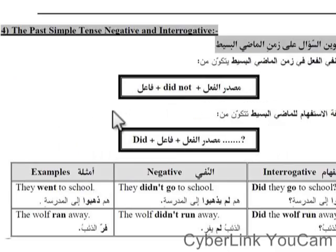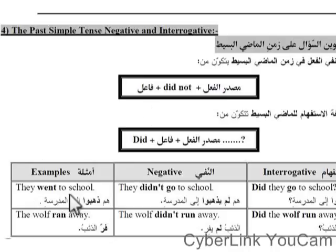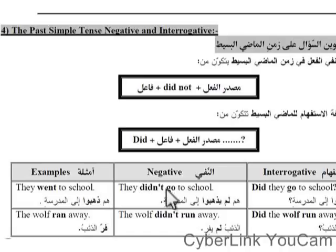في الـ negative والـ question — في الـ negative بننفي بـ didn't. القاعدة بتقول نحط الـ subject وبعده didn't وبعده المصدر. زي: they went to school — هعملها negative هقول: they didn't go to school. هنا رجعت went للفعل الأصلي اللي هو go لأن didn't بيجيب الفعل في الـ infinitive. أعمل سؤال: did they go? — وبردو الفعل نزل في الـ infinitive. يعني في النفي didn't أو في الـ question بـ did، الفعل لازم ينزل في الـ infinitive form.